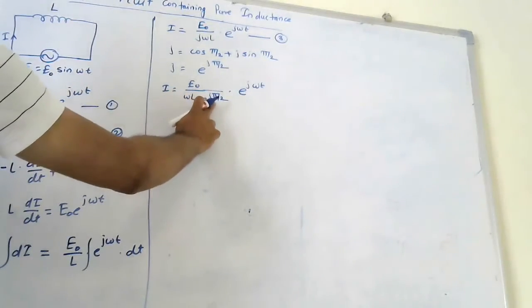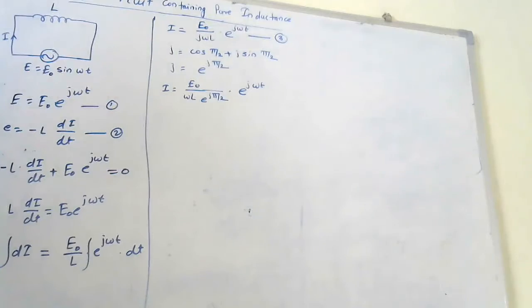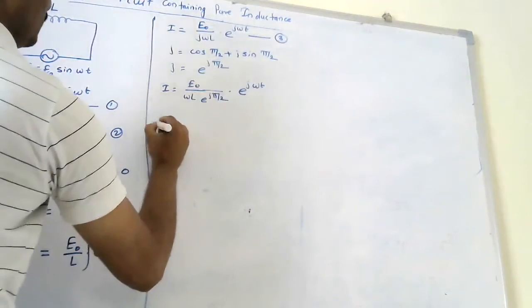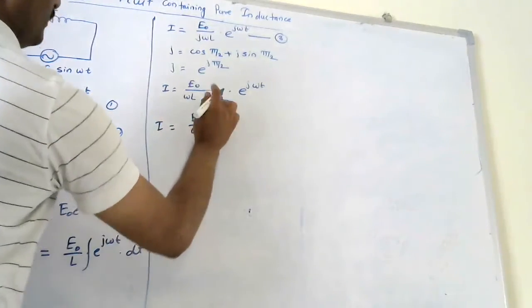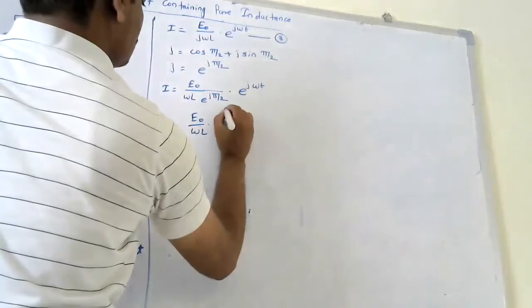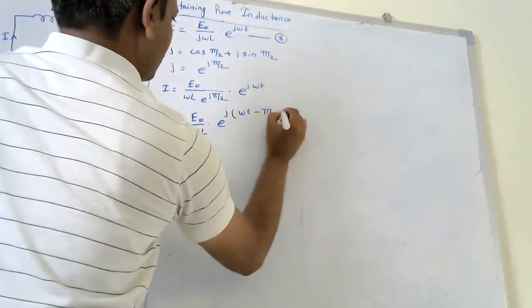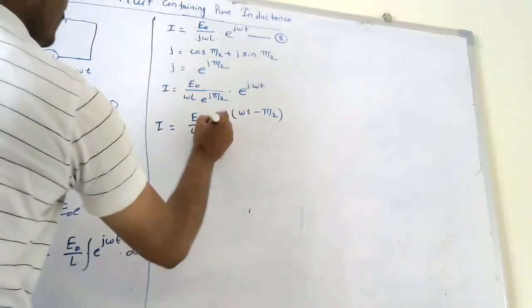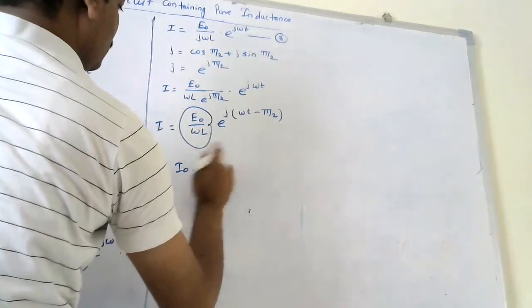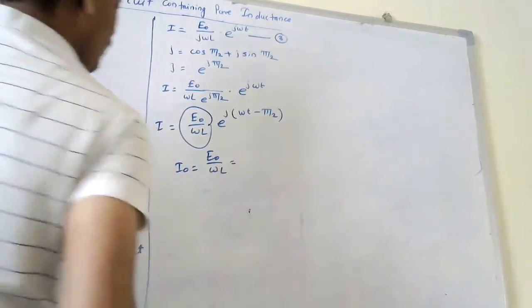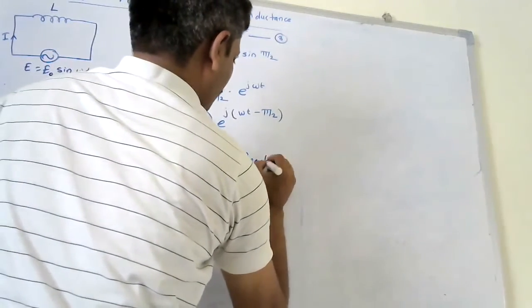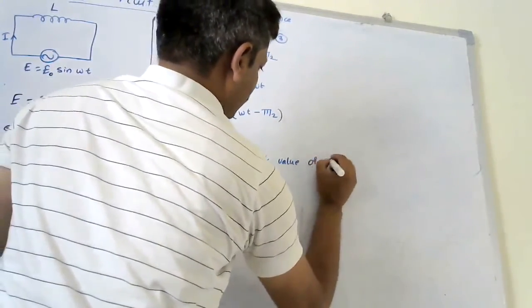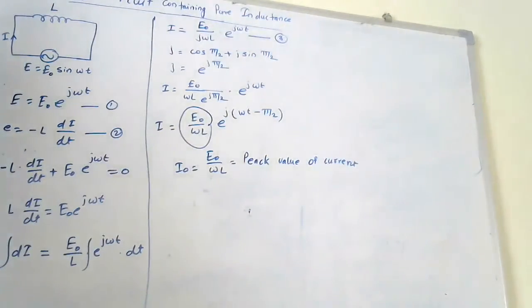So I is nothing but I0 into e to the power j(ωt minus π/2), where I0 is E0 upon ωL. This I0 is called the peak value of current.